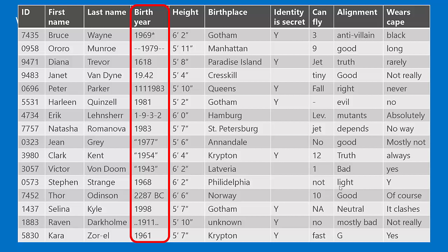To clean this up, we need to make sure these are all formatted the same way. After going through and fixing them, we take '2287 BC' and turn it into negative 2287, so it can be easily interpreted by our algorithm.